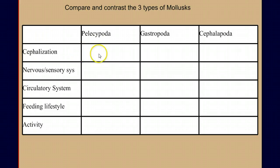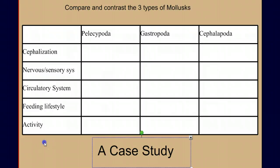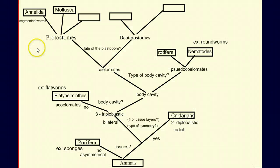So in this one phylum, we have a very distinct comparison of the pelecypods versus the gastropods versus the cephalopods, as we look at the noncephalized, cephalized, and highly cephalized. You could go through and finish filling out a chart as a compare and contrast to finish our case study on the mollusks. In our next video, we're going to look at arthropods, which is the last of our protostome groups.